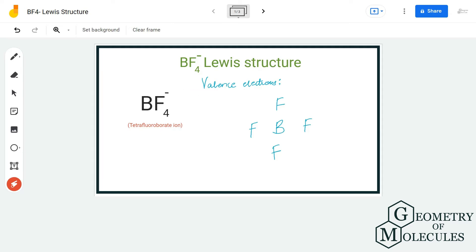Here boron atom has three valence electrons in its outer shell. Each fluorine atom has seven valence electrons in its outer shell, and there is an additional electron over here because of which this ion has a negative charge. Hence in total we have 32 valence electrons for this ion.